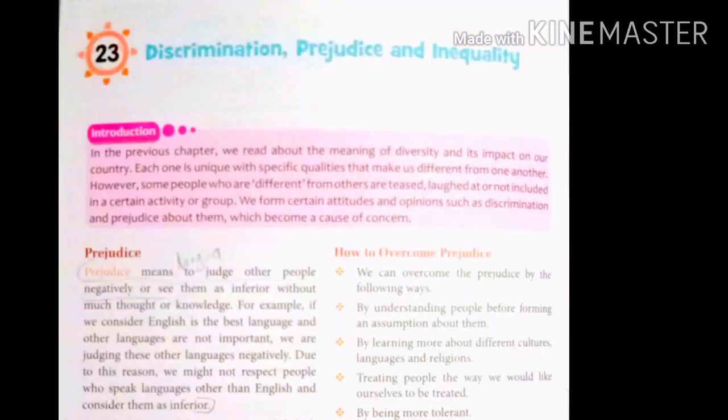So students, let's continue with our chapter on discrimination, prejudice, and inequality. Discrimination means bhedbhav — unfair treatment of a person or group. Prejudice means pakshapat, that is biases. And inequality, or asamanta, refers to the difference between groups in society.